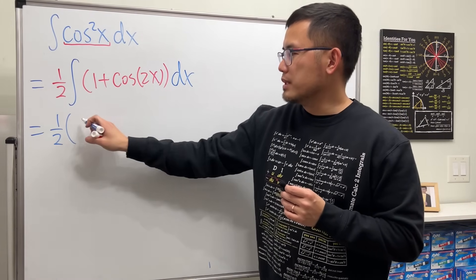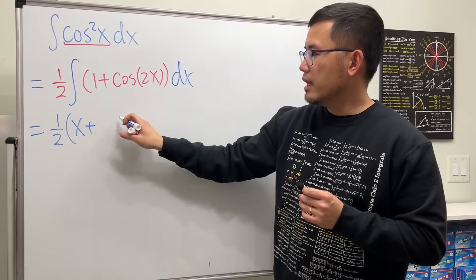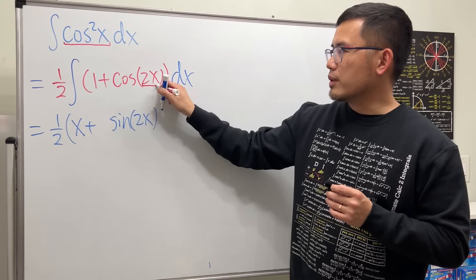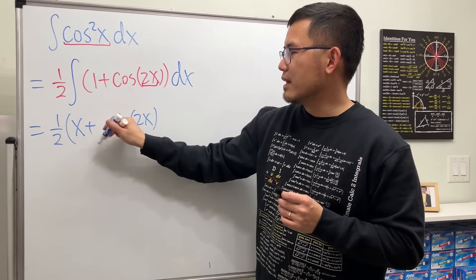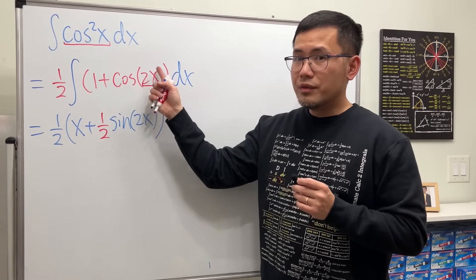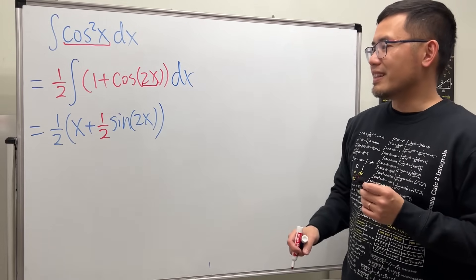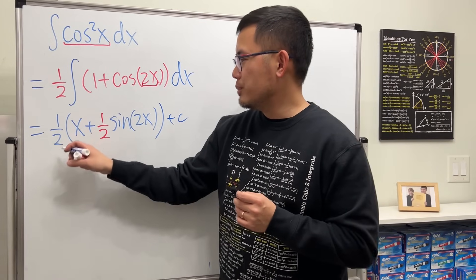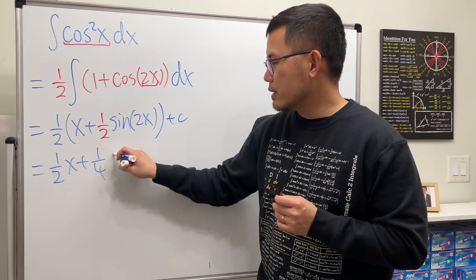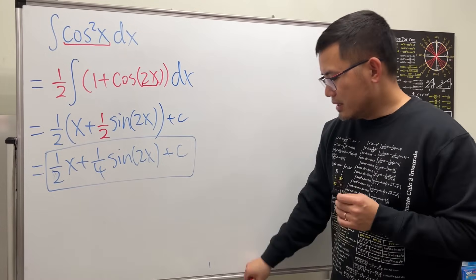Integrating 1 in the x world is just x. Integrating cosine of 2x — the integral of cosine is positive, so it's plus sine. Since this is a number times x, the derivative of 2x is 2, so we divide by 2, giving one half. We can distribute the one half: that's (1/2)x plus (1/4)sine(2x) plus C. This is the intended standard solution.